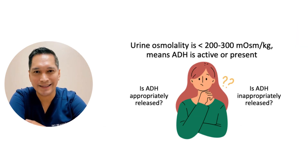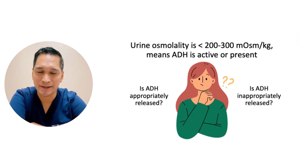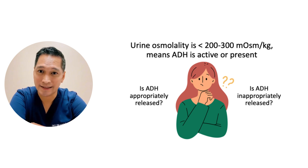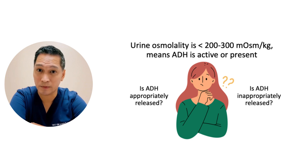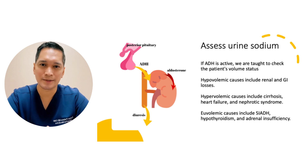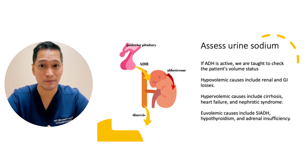If the urine osmolality is greater than 200 to 300, then the cause of the hyponatremia is ADH-dependent disease — therefore, ADH is active or present. If ADH activity is present, the next step is to identify whether ADH release is due to a low effective arterial blood volume, which is appropriate ADH secretion, or whether the ADH is inappropriately released. An elevated urine osmolality is associated with elevated ADH levels, but this does not tell us why ADH is active in the first place.